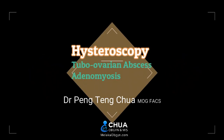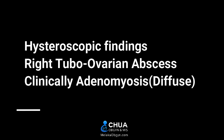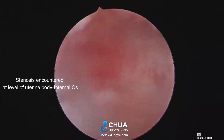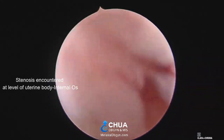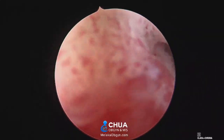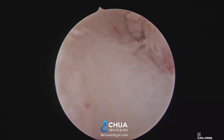This is Dr. Chua presenting a hysteroscopy finding for tubal ovarian abscess and adenomyosis. In a typical hysteroscopic examination, you can first see the cervical canal — especially the endocervical canal and the junction between the uterine body and the uterine cervix — which is actually stenosed.